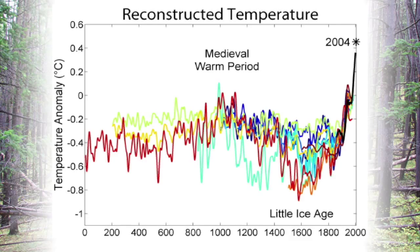That variability isn't adequately portrayed by graphs that only show averages. Even though it may have been cold in North America at a given time, it may have been warm in a different part of the northern hemisphere. Climate is a highly variable phenomenon that really can't be defined by a single average temperature line.